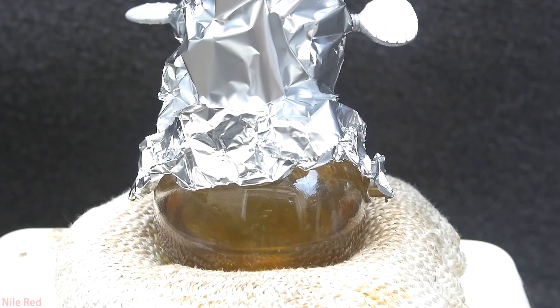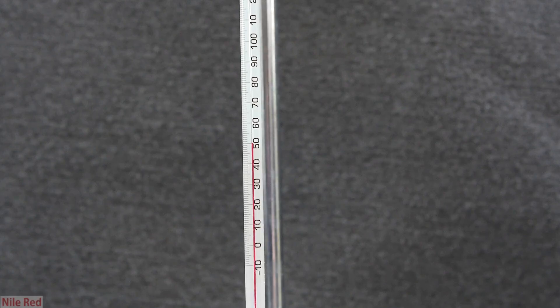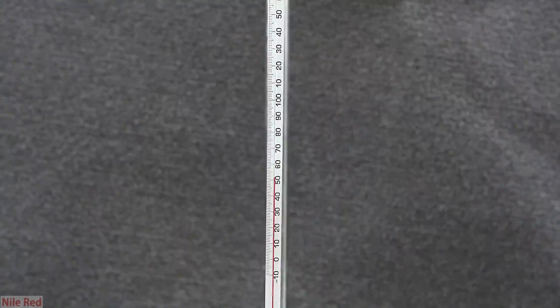When we're ready, we place the heating mantle under the flask, we start our stirring, and we heat things up. As we heat things up, we'll start to collect the acrolein at around 50-51°C. The temperature slowly rose a couple of degrees, and we collected the bulk of the acrolein at around 52-53°C.